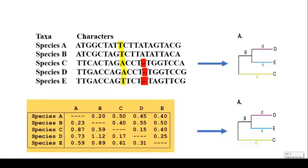The character-based methods look at any nucleotide or amino acid at a site in DNA, protein, or any sequence, or the presence, absence, or deletion of any site. Each nucleotide or amino acid site in a DNA or protein sequence can be considered as a character site. In the first section of the slide you can see an example of the character-based method.